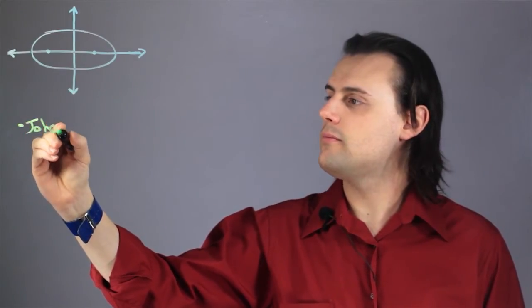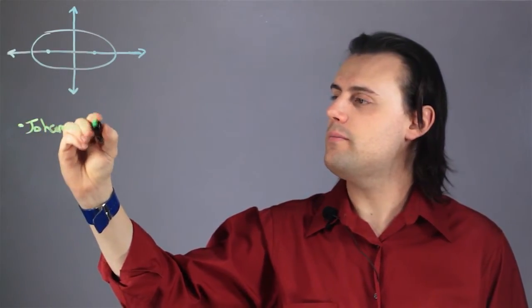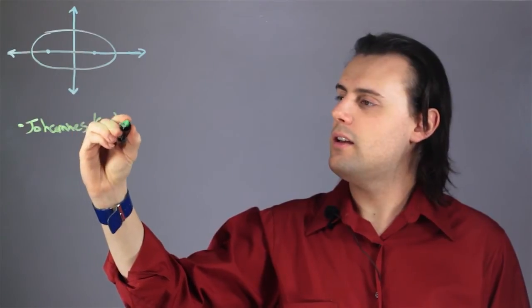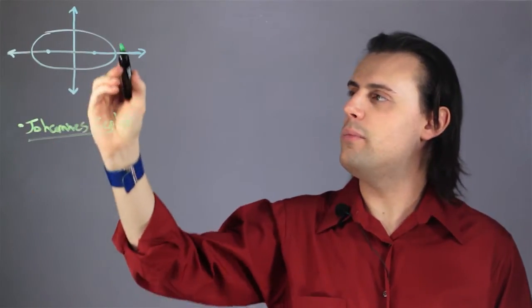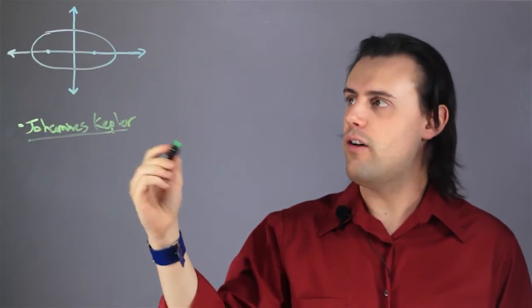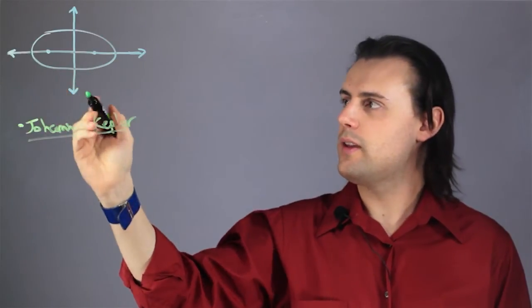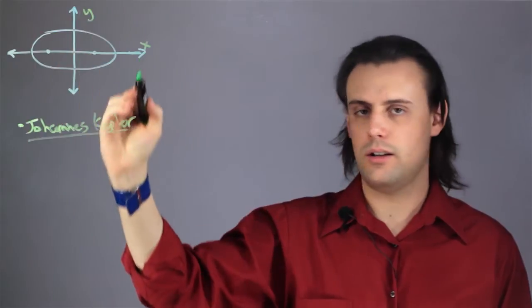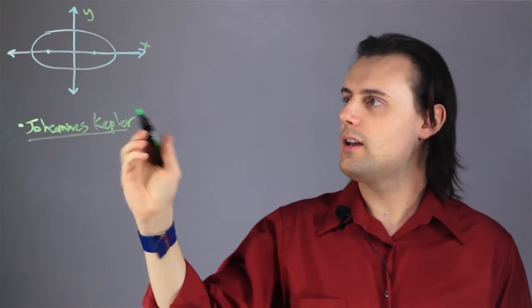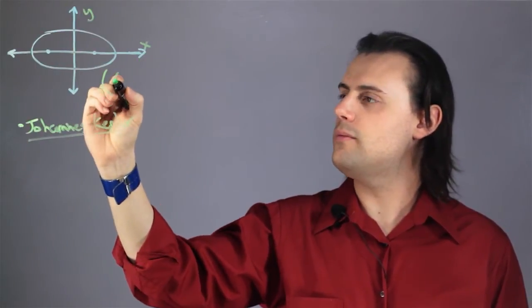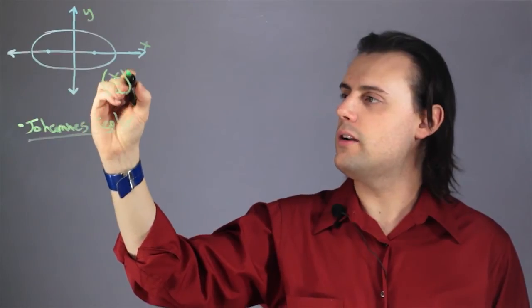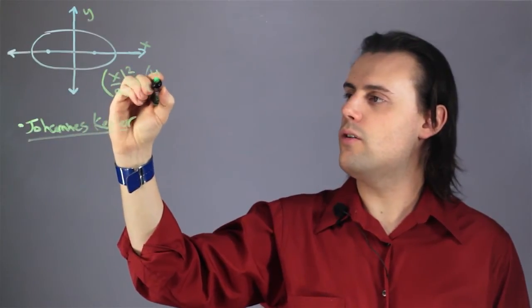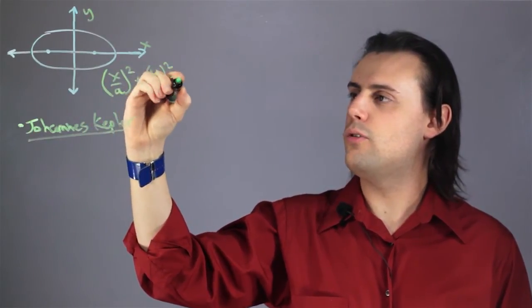Johannes Kepler, in the 17th century, discovered that the orbits of planets around stars follow elliptical trajectories. An ellipse in Cartesian coordinates, here in a two-dimensional surface, can be described by the equation x over a squared plus y over b squared is equal to 1.